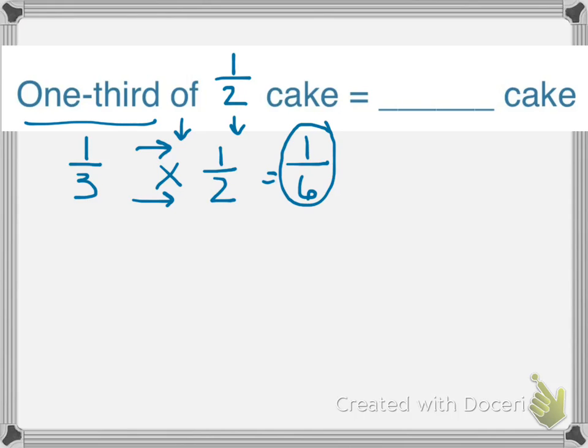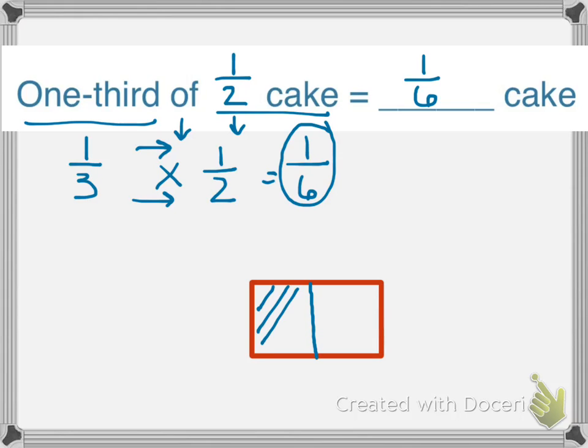Again, I want to draw a model to represent our thinking. So this rectangle will once again represent our cake pan. Now it's telling us that our cake pan should be half of a cake. So again, I'm going to partition my cake pan in half, and I'm going to shade one half of the cake, and I'm going to label it one half.